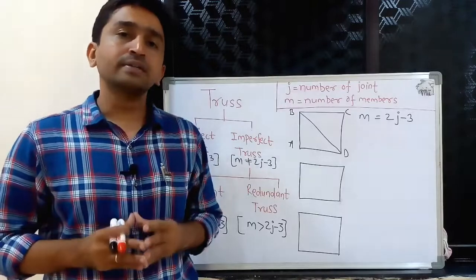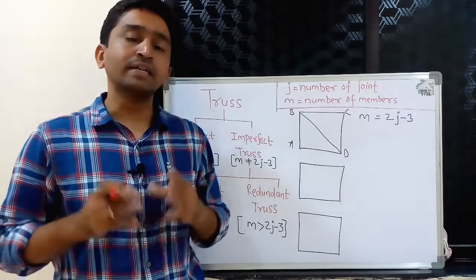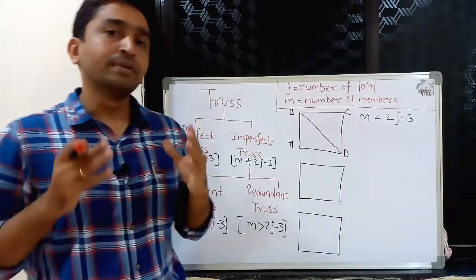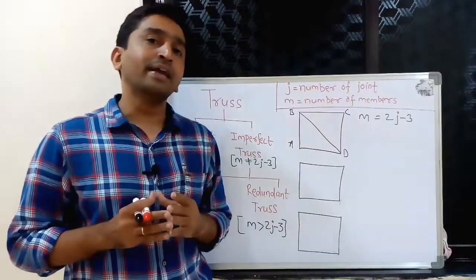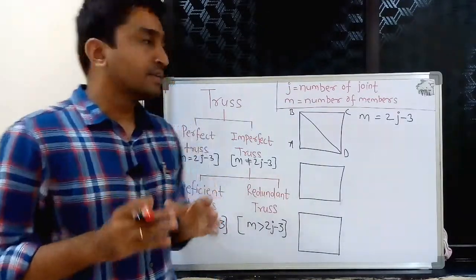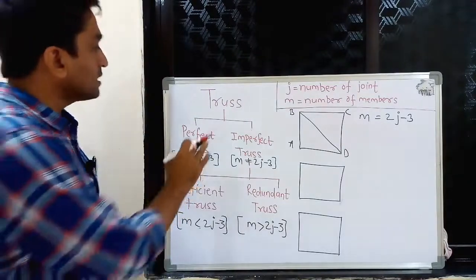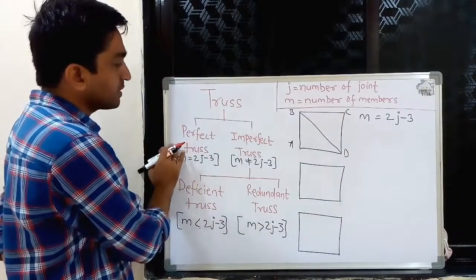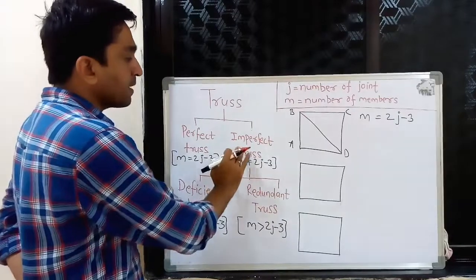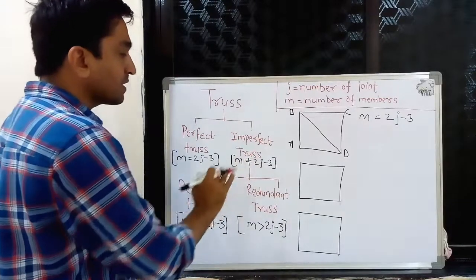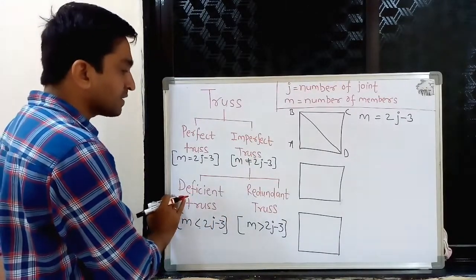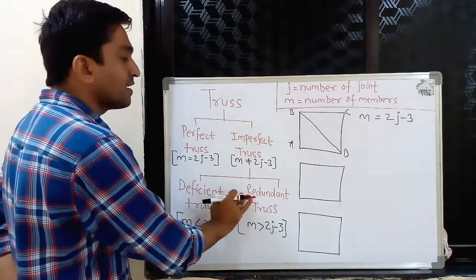A truss can be defined as a structure made up of linear members which are connected at their ends by a pin joint. A truss is broadly classified into two categories: perfect truss and imperfect truss. Imperfect truss is again classified into subcategories, that is deficient truss and redundant truss.